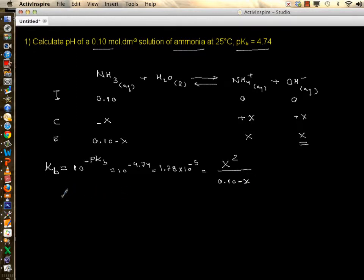Then again, we don't want you to solve it quadratically, so we write our assumption. Since Kb is much smaller than 1, which it is at magnitude of 10 minus 5, then you can say 0.10 take away x is really equal to 0.10.